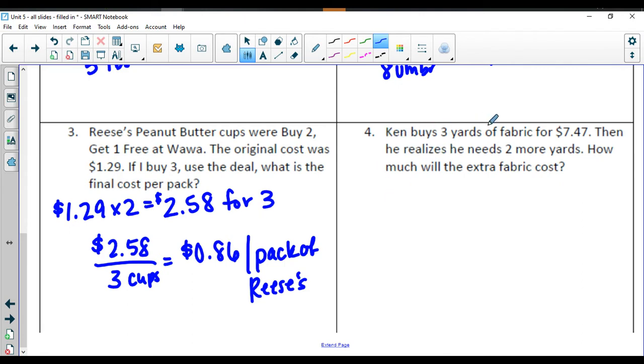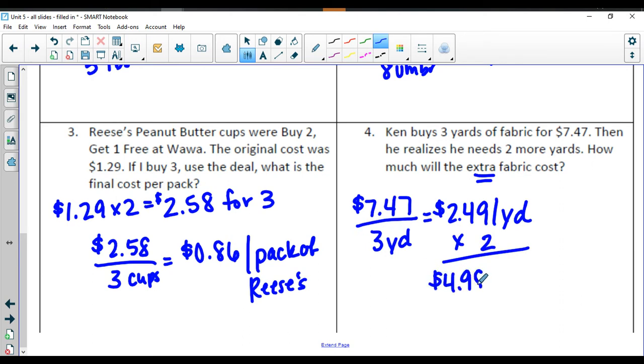Number 4: Ken buys 3 yards of fabric for $7.47. Then he realizes he needs 2 more yards. How much will the extra fabric cost? So he's getting $7.47 for 3 yards. $7.47 divided by 3 is going to give me $2.49 per yard. If he needs 2 more of these, we're going to go ahead and times that by 2, which will give us $4.98 for the extra that he needs.